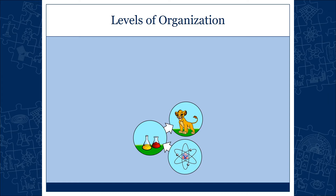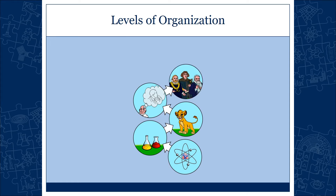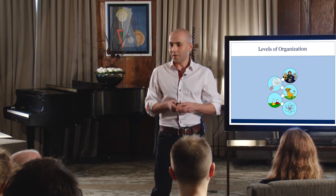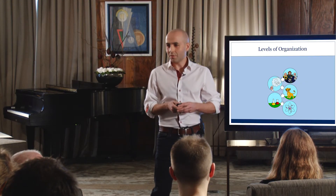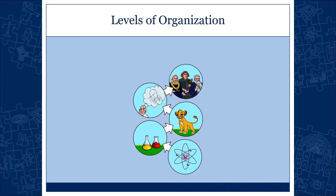Some of these creatures develop neural networks capable of thinking, and they organize themselves into societies. These societies produce all sorts of interesting things, like family, friendship, economy, and politics. Among other things, these societies are capable of producing science — in particular the end product of science, which is the scientific mosaic.